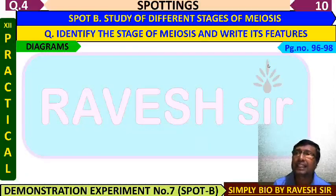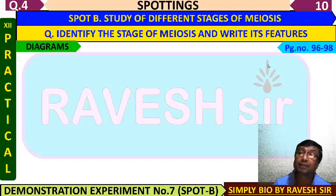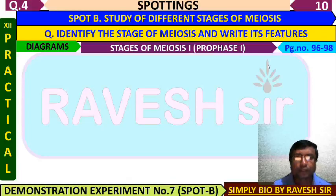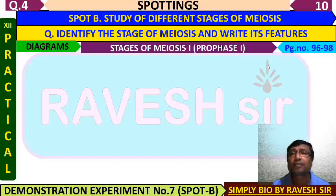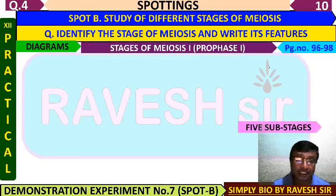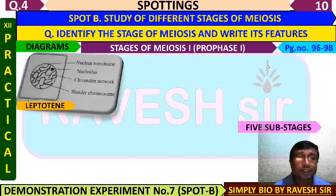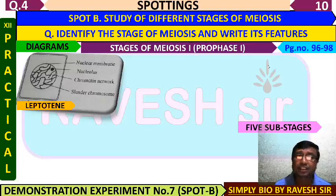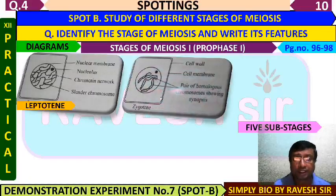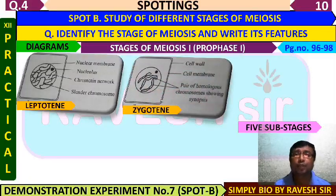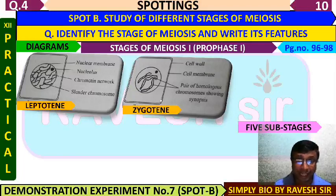On pages 96–98 we can see the 5 sub-stages of Prophase 1. The first sub-stage is leptotene, where chromosomes condense and appear as prominent thread-like structures. The second is zygotene, where pairing occurs — each chromosome finds its partner — and homologous chromosomes pair up in a process called synapsis.